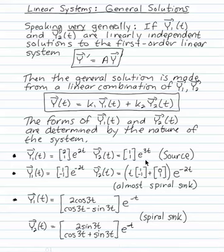Here's source, an almost spiral sink with the eigenvector and the almost eigenvector, and then a spiral sink with oscillation and decay. Those are examples of different kinds of y1 and y2 we can have.